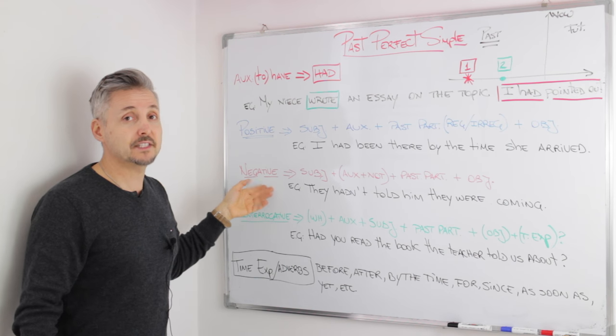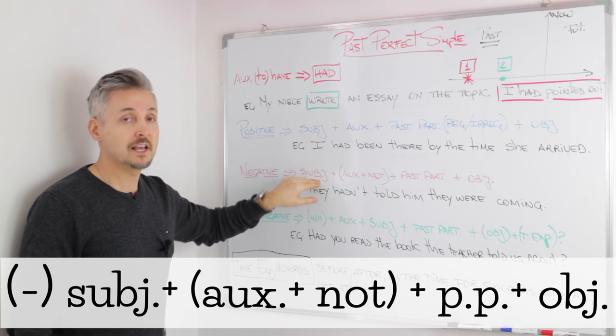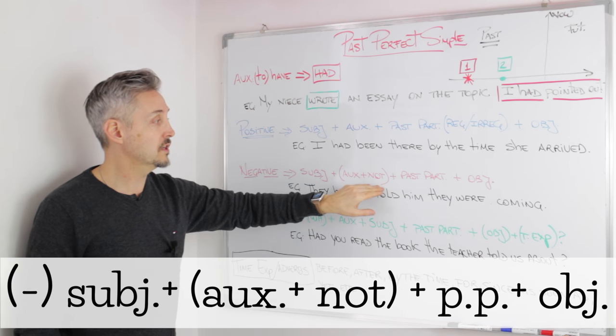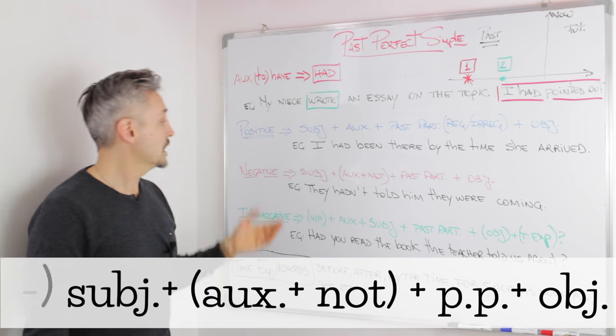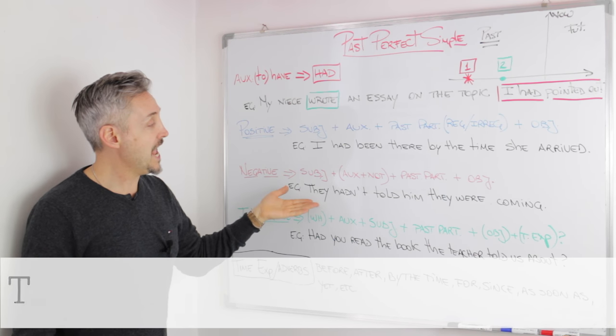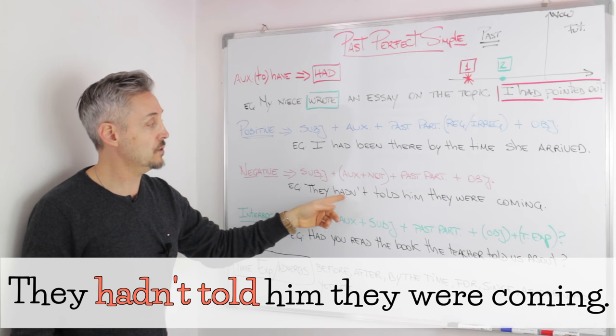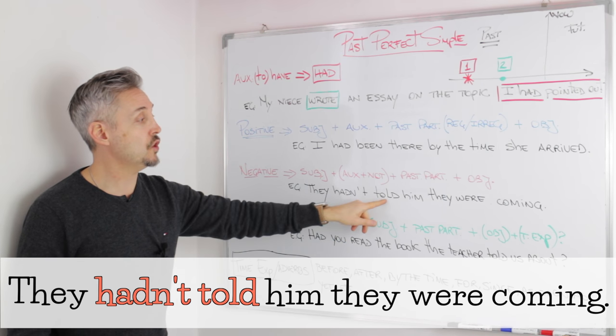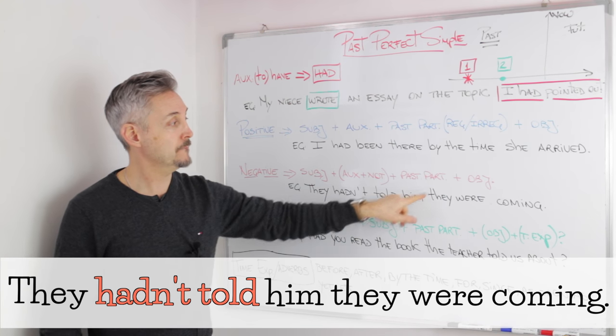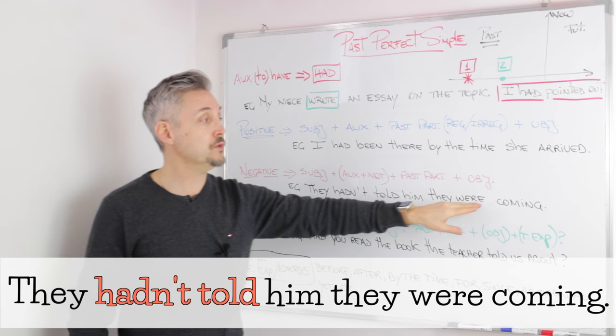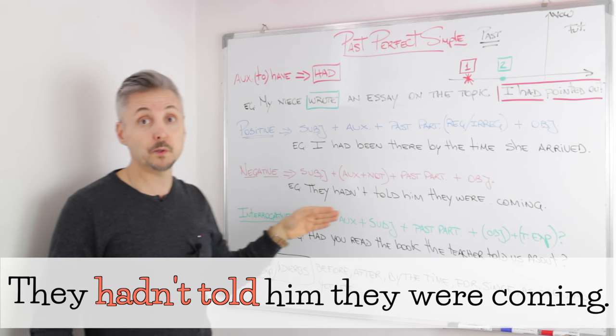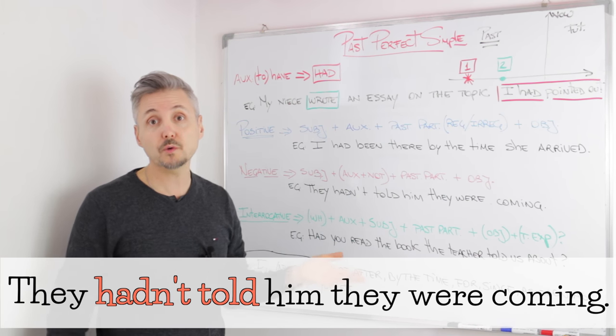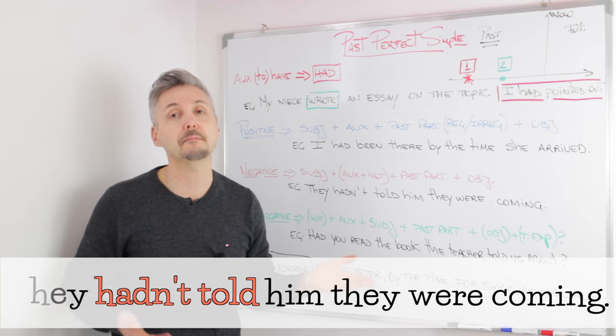Now, for a negative sentence, we need the subject, then the auxiliary plus not, then the past participle, and then the object. So the example, they hadn't, so had plus not, told him they were coming. In this case, we have the past continuous, so we can use the past perfect also with the past continuous, because it's a past.